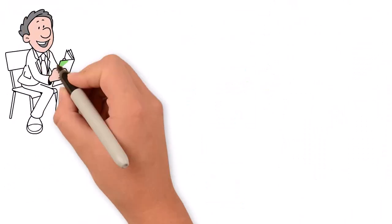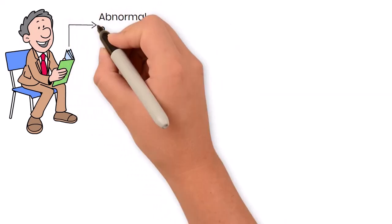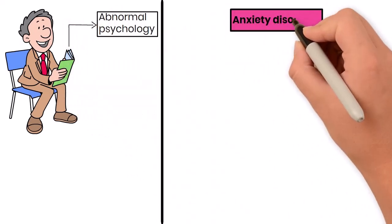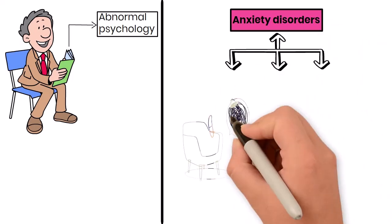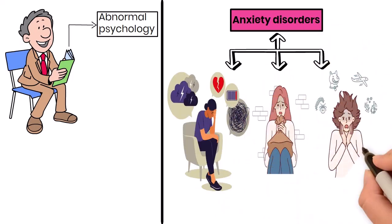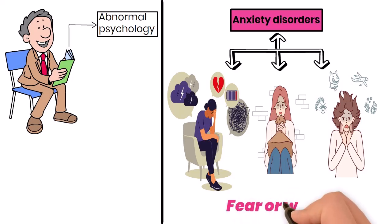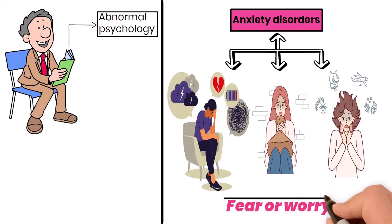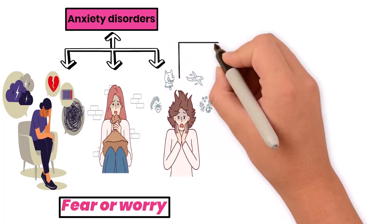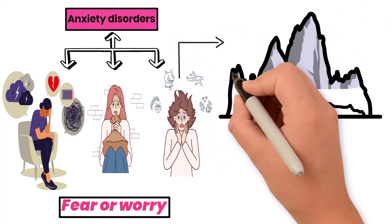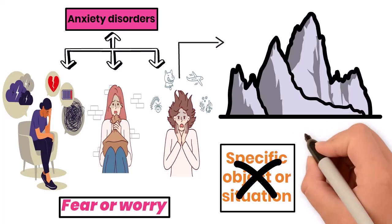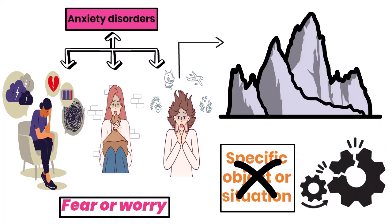Let's look at some key areas of study within abnormal psychology. The first is anxiety disorders. These can include generalized anxiety disorder, panic disorder, and phobias. They involve excessive fear or worry that can interfere with daily life. For instance, someone with a phobia might go to great lengths to avoid a specific object or situation, even if it means disrupting their routine.